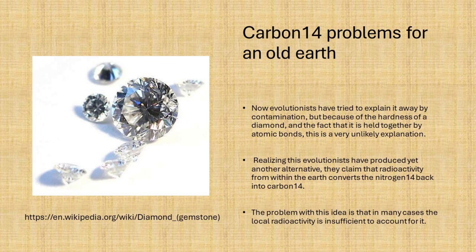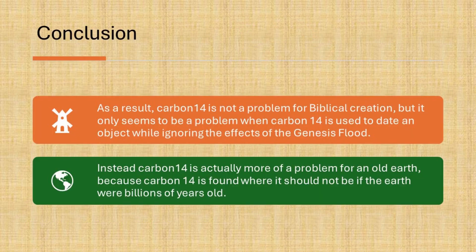Evolutionists have tried to explain this away by contamination, but because of the hardness of a diamond and the fact that it is held together by atomic bonds, this is a very unlikely explanation. Realizing this, evolutionists have produced yet another alternative, claiming that radioactivity from within the Earth converts nitrogen-14 back into carbon-14. The problem with this idea is that, in many cases, the local radioactivity is insufficient to account for it. As a result, carbon-14 is not a problem for biblical creation, but it only seems to be a problem when carbon-14 is used to date an object while ignoring the effects of the Genesis Flood. Instead, carbon-14 is actually more of a problem for an old Earth, because carbon-14 is found where it should not be if the Earth is billions of years old.